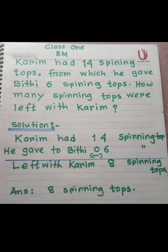Koream had 14 spinning tops, from which he gave Vithi six spinning tops. How many spinning tops were left with Koream? That means Koream had 14 spinning tops and he gave some to Vithi.